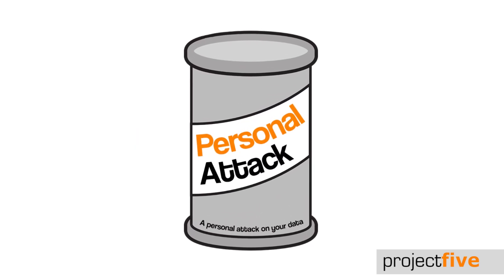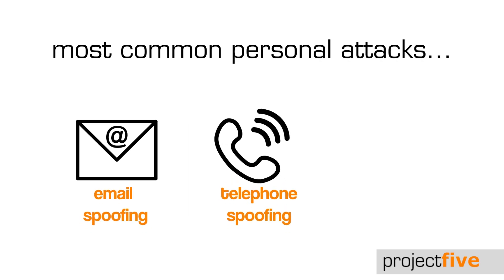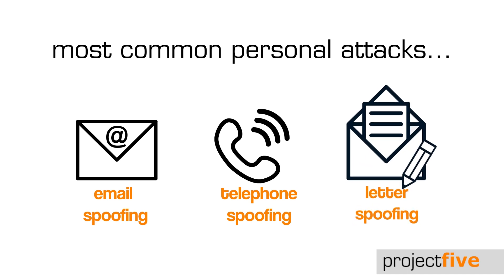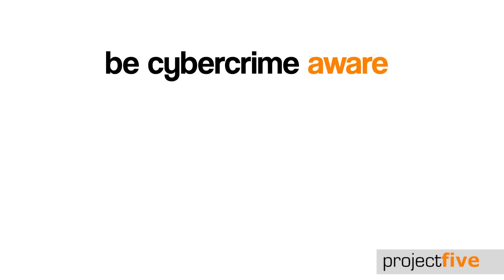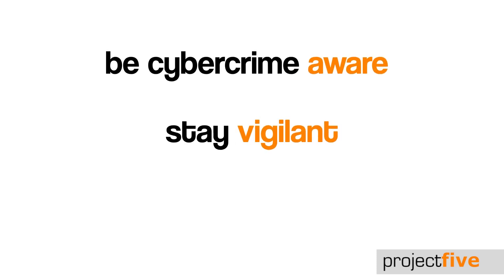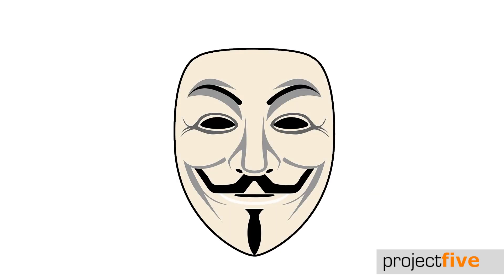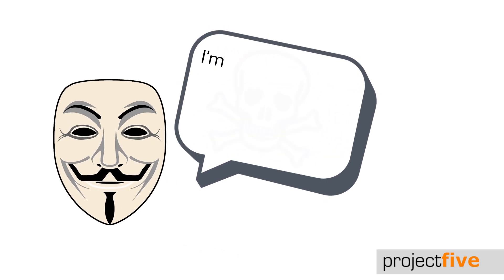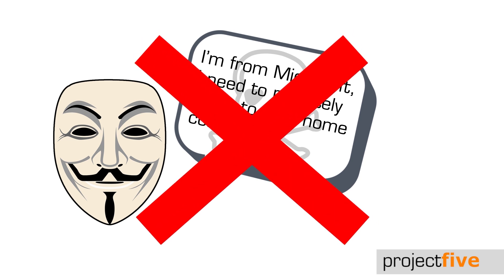Number three: personal attack. This is exactly what it says on the tin — a personal attack on your data. The most common types are email spoofing, telephone spoofing, and letter spoofing. How can you avoid it? Be cybercrime aware, stay vigilant, and use your common sense. If someone calls you from Microsoft to remotely log on to your home computer, the chances are it's fake.